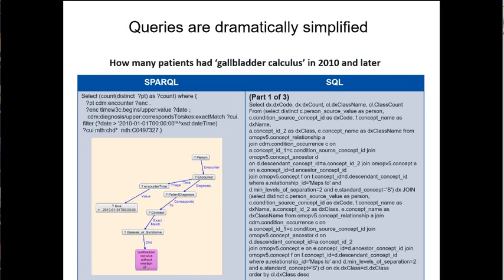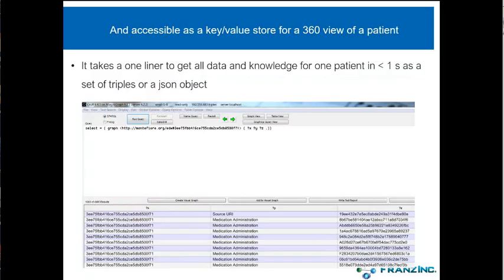This is a very important slide. Another key benefit is getting all the information about one entity back. If most people try to do that in an enterprise data warehouse, they won't even try. In our system, I can just do a 'SELECT X' — for this particular patient, give me all the triples — and I can get that back as a JSON object or as a set of triples and work with it in less than a second. I write the query in ten seconds and have the result in under a second.